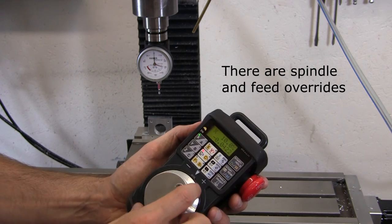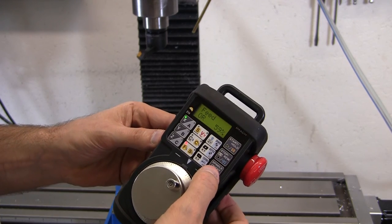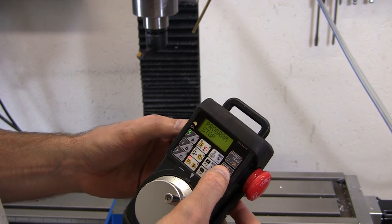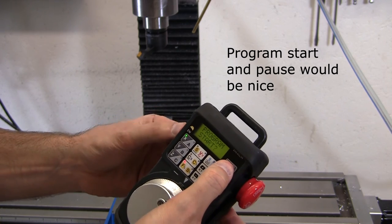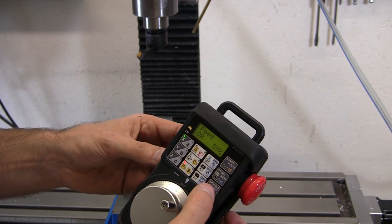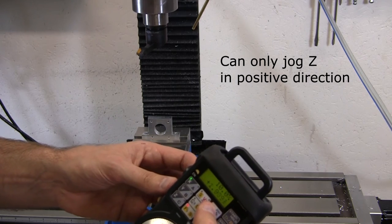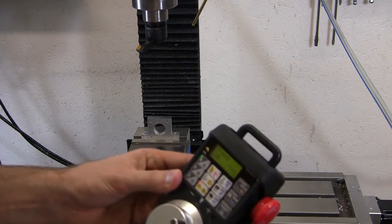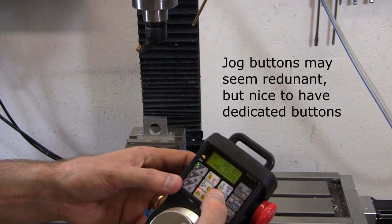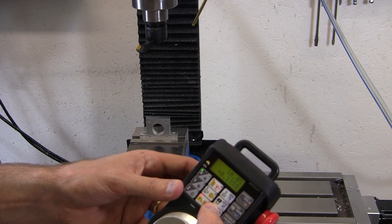When a program is running, you have the ability to change the feed rate. These buttons on the side don't seem to do anything currently. I can't turn on the spindle. There's no program running currently, and the program start option doesn't work either. It'd be nice to be able to turn the spindle on and off. You can jog the z-axis by pressing this button. You can also jog the x and y-axis by pressing this button to go in the positive direction, or this button to go in the negative direction.